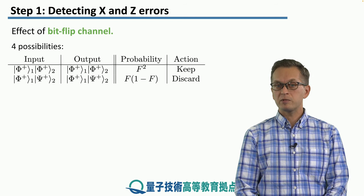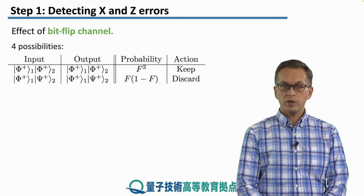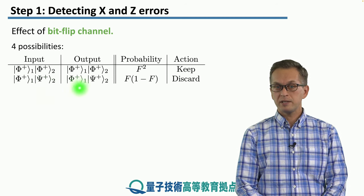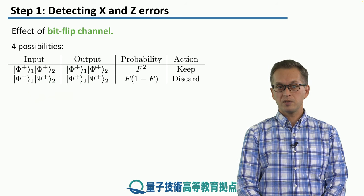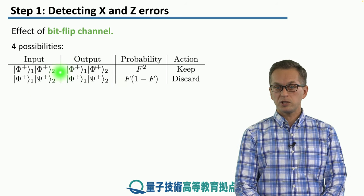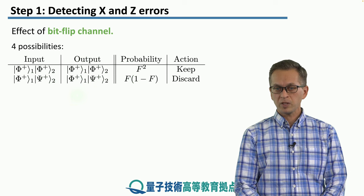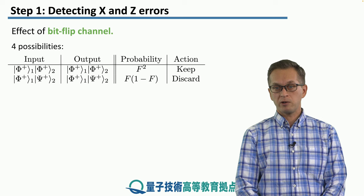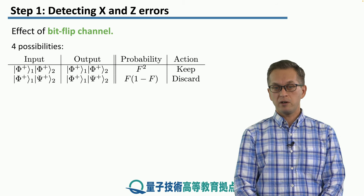With probability F times 1 minus F, we get the following input: the first pair is unaffected by noise, but the second pair is affected by noise. Again, the CNOT gates do not change the state. But this time, when we measure the second pair in the Z basis, we get anti-correlated outcomes. So we discard the first pair.